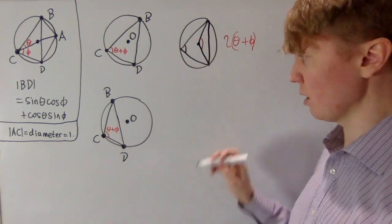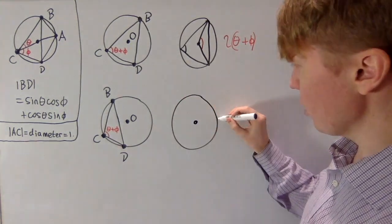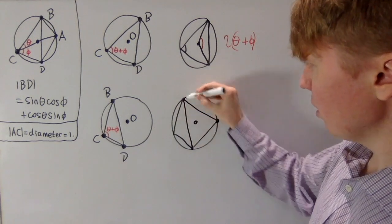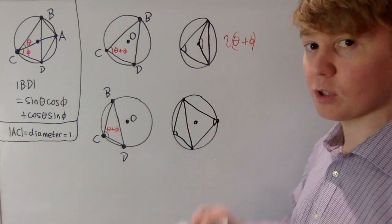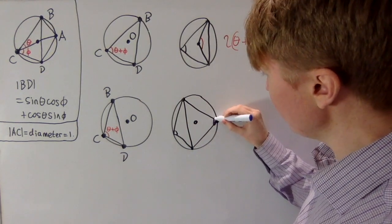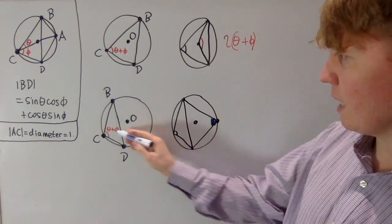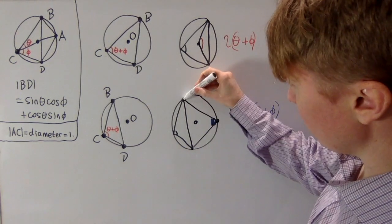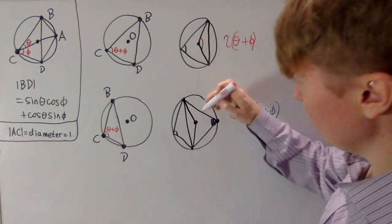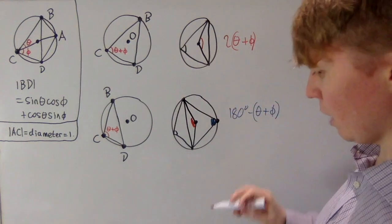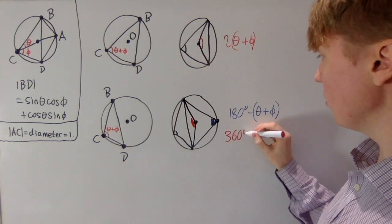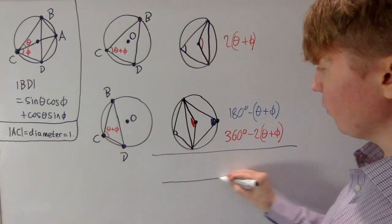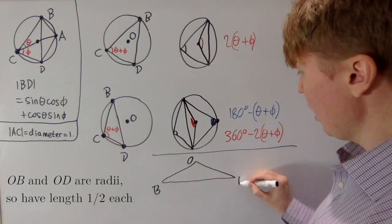In the scenario where O doesn't lie within the triangle, we draw in an extra point on the other side. Opposite angles in a cyclic quadrilateral sum to 180 degrees, so the opposite angle is 180 degrees minus (theta plus phi). Drawing triangle OBD, the central angle BOD is double this, giving 360 degrees minus 2 times (theta plus phi).